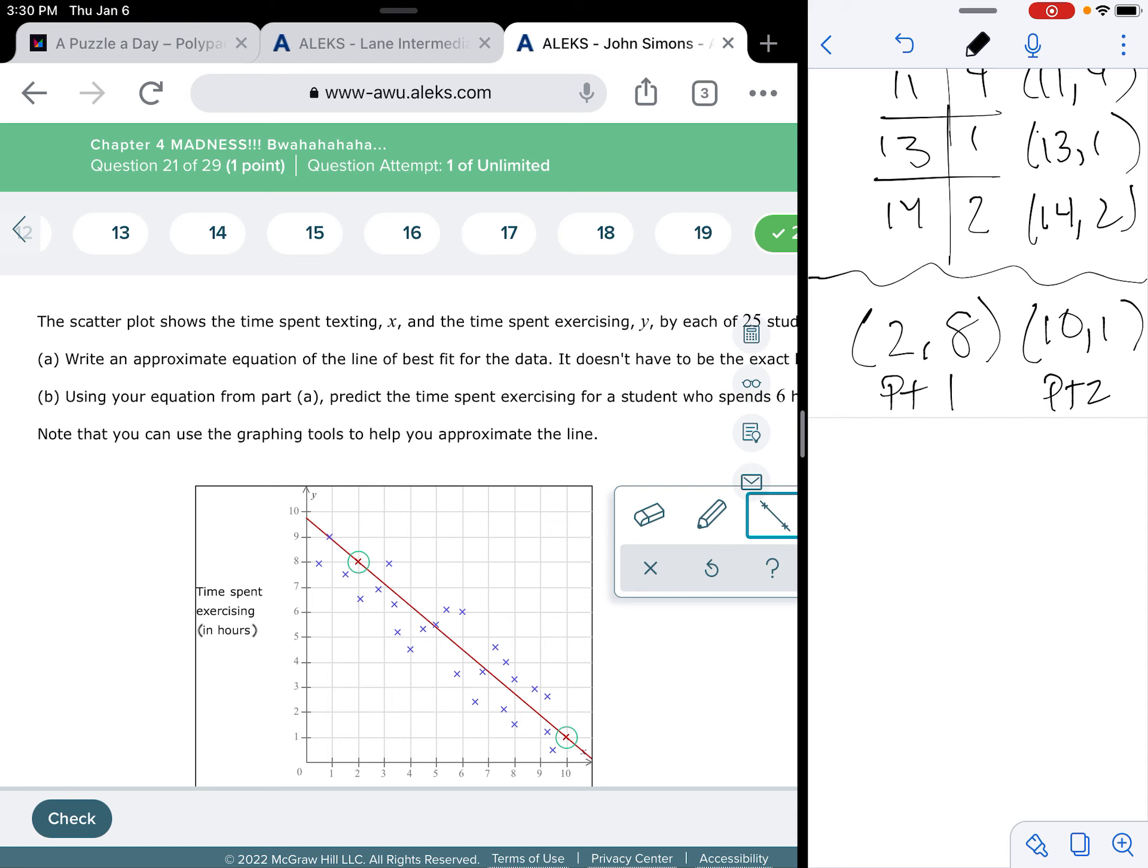So, I'm going to do what I do any time I write an equation, and I am going to figure out what the slope is first. So, the slope is going to be change in y over change in x. Well, the y changes from 8 to 1, so that would be 8 minus 1. And then the x changes going from 2 to 10, so that would be 2 minus 10.